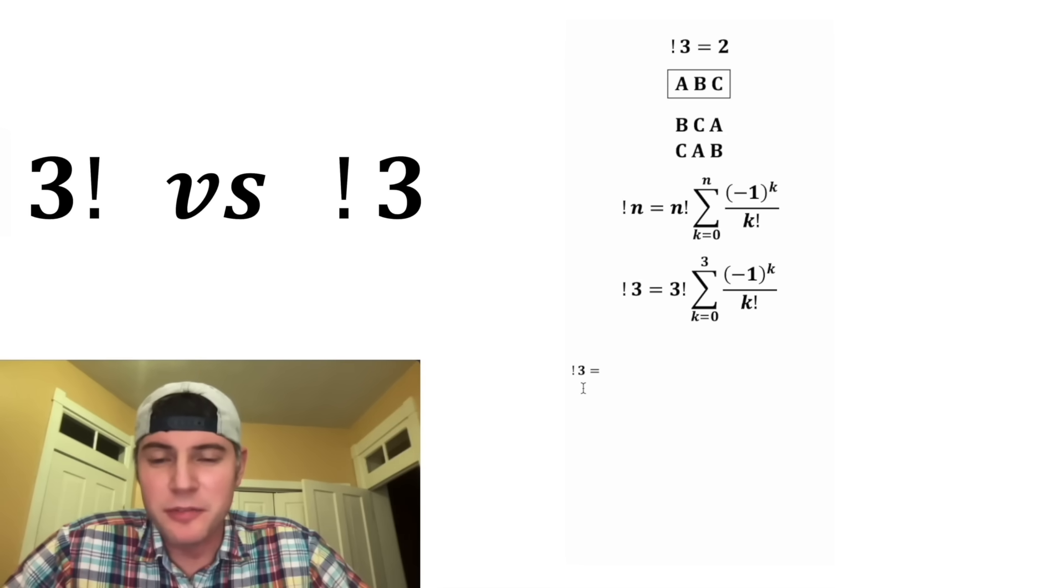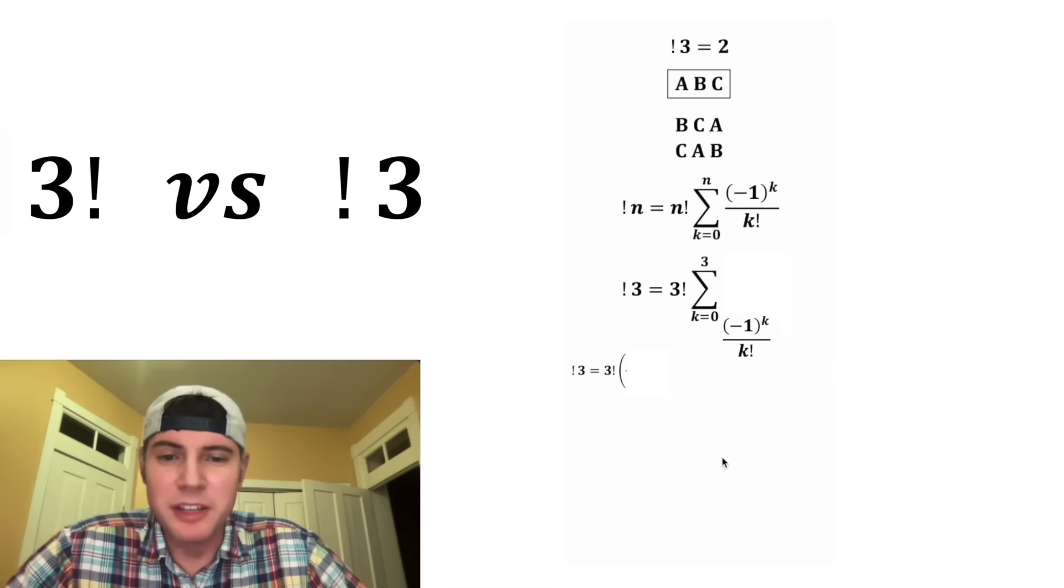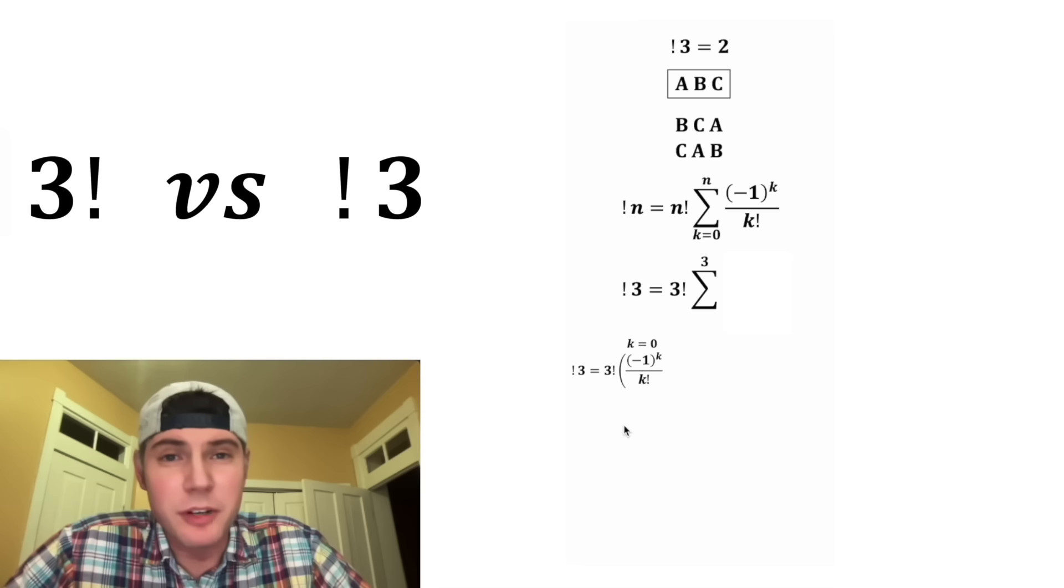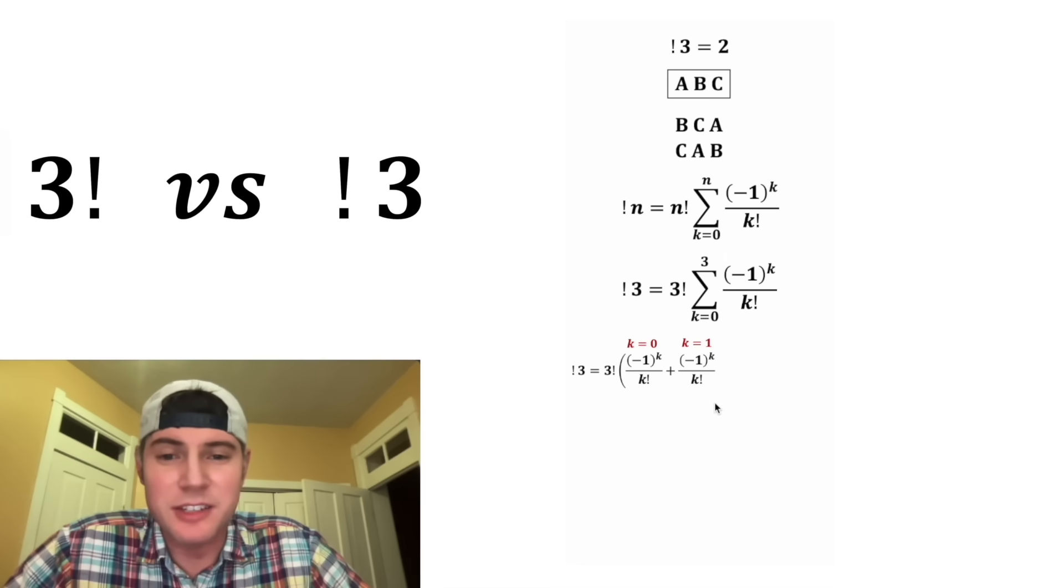So we'll say 3 subfactorial is equal to, we can copy down the 3 factorial. And then in order to do this sum, we're going to bring this down. And we're going to evaluate it for k equals 0. And then we're going to add to that the same thing for k equals 1, and then k equals 2, and then k equals 3. And then we stop when we get to this number right here.